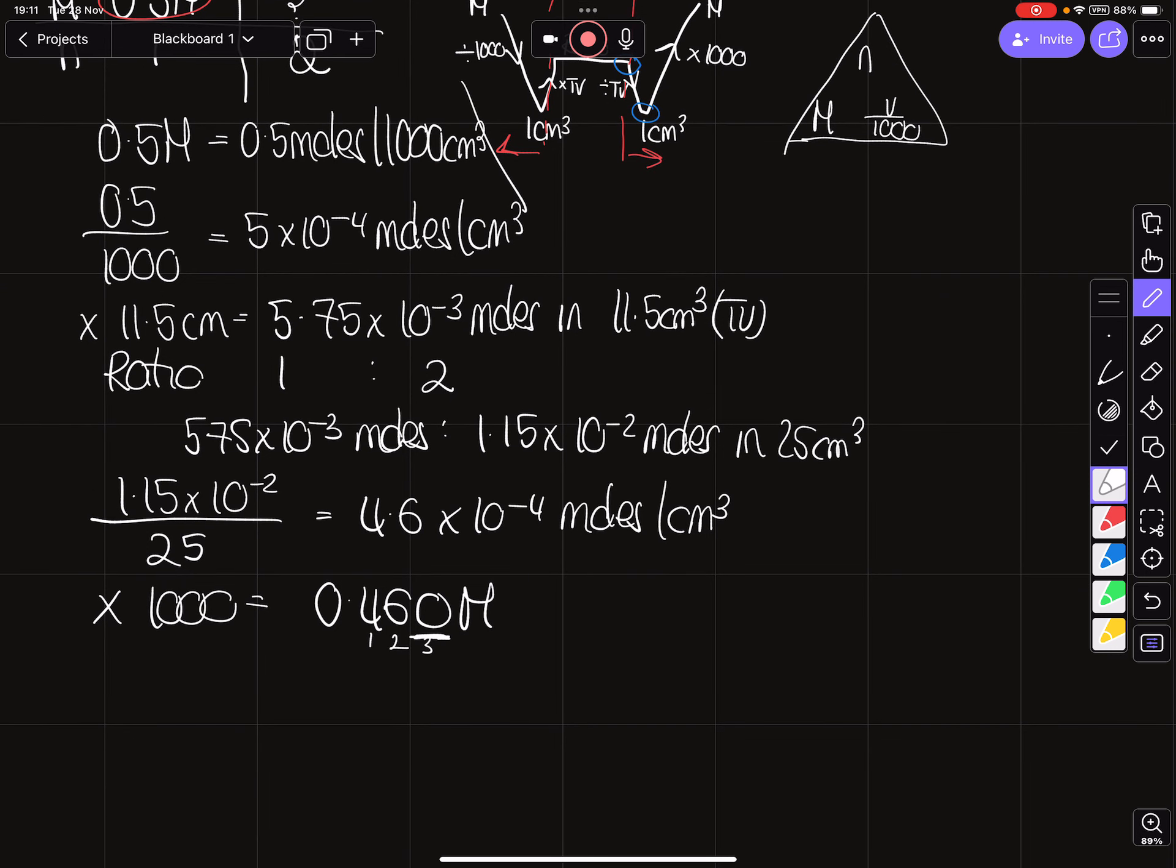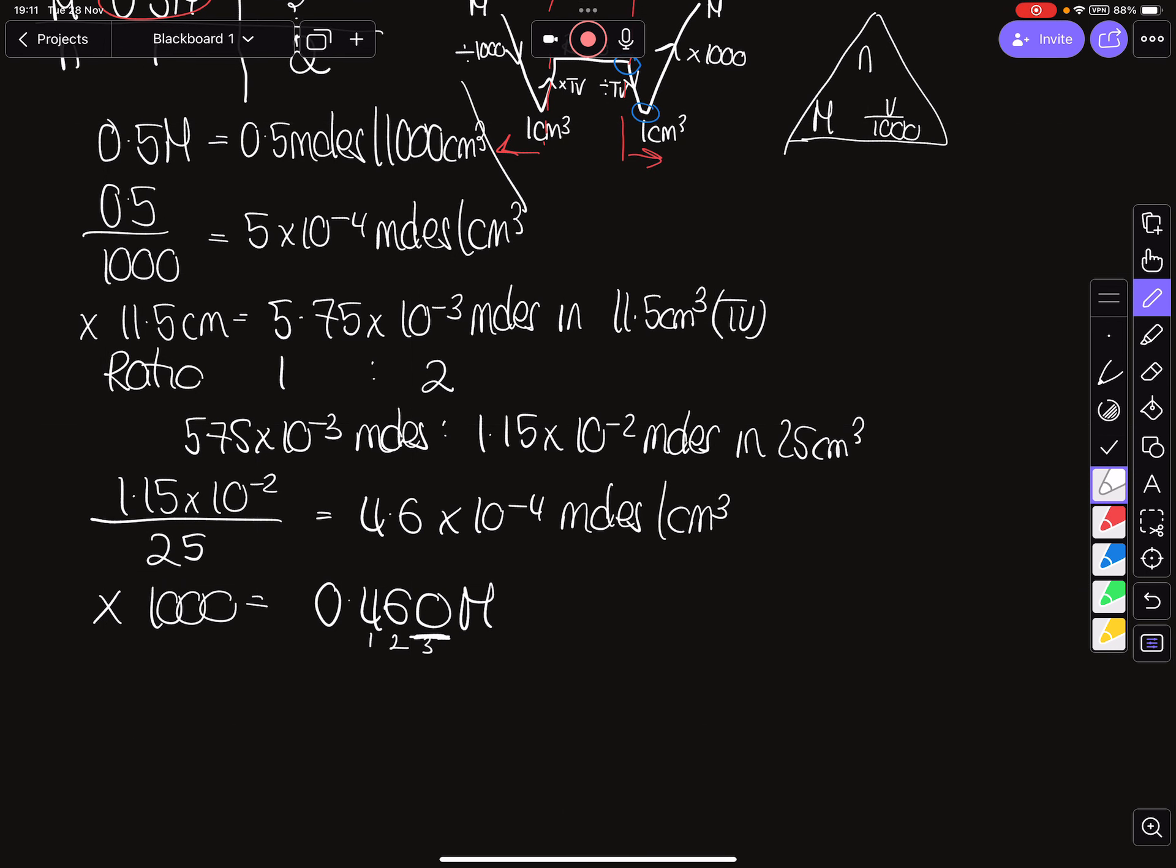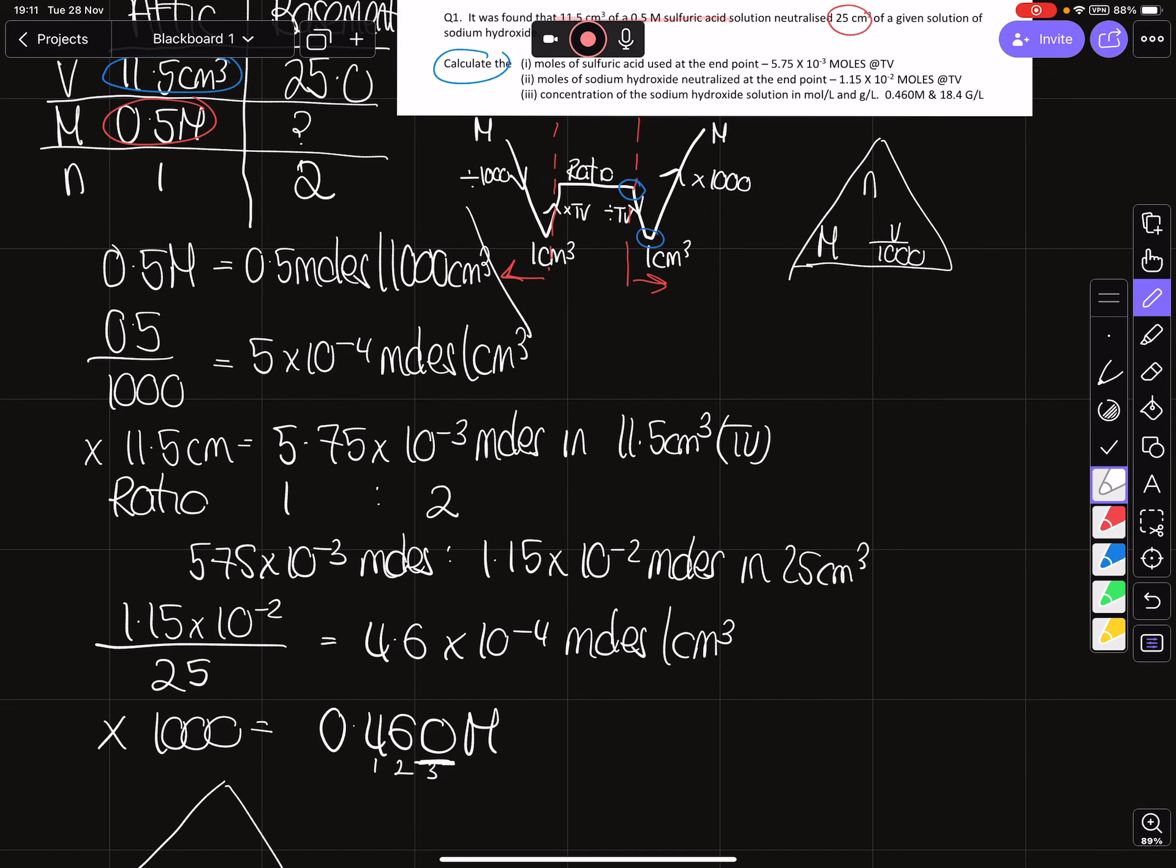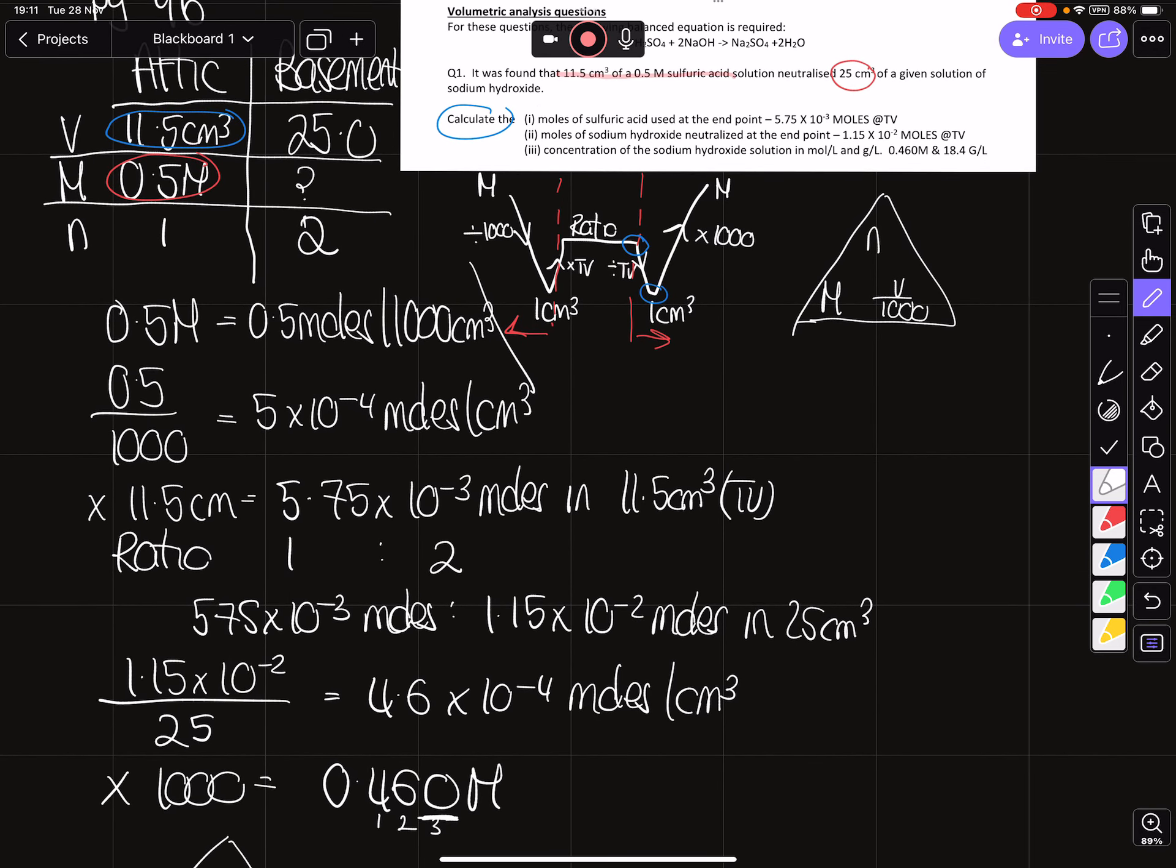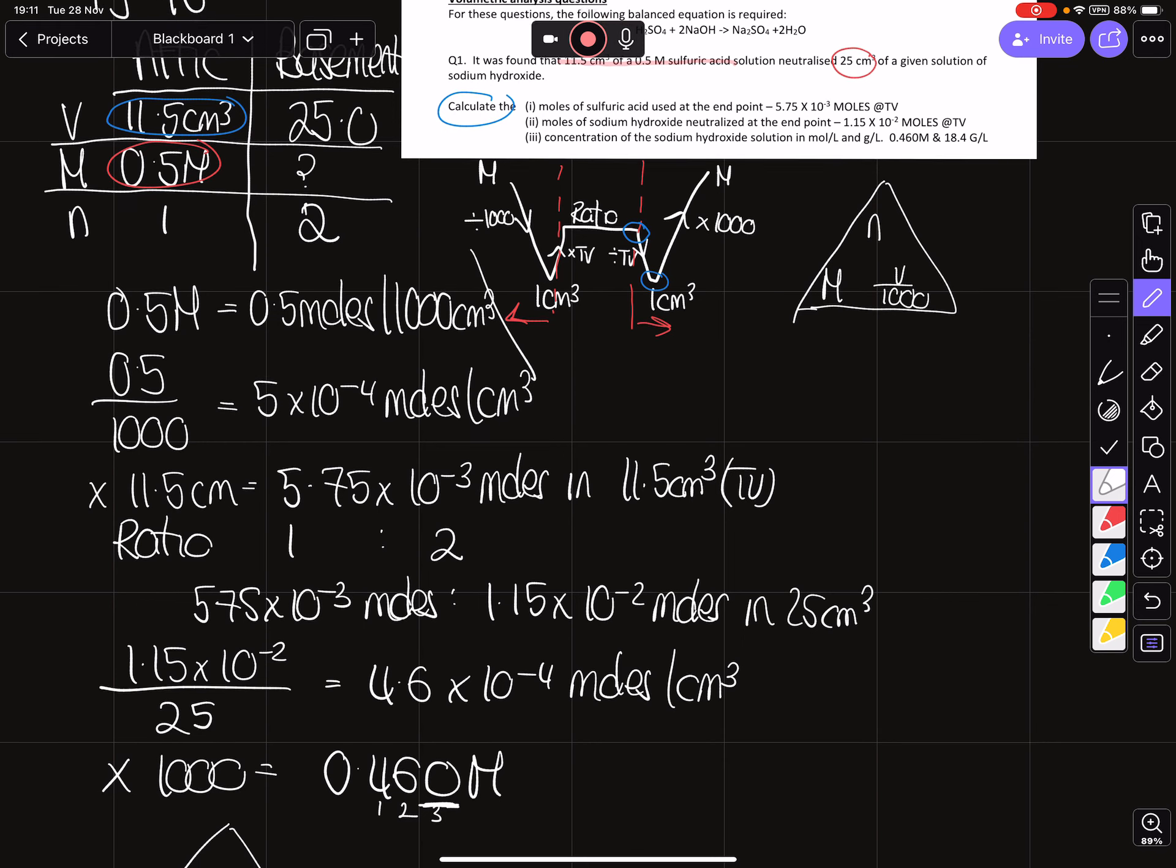Still haven't looked at my question in terms of my annotating, but for now I'm going to convert my 0.460 moles per liter. I'm going to convert that into grams per liter. To do that we use our mass triangle. So the 0.460 is going to go over here. I need to calculate for myself a relative molecular mass.